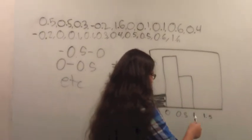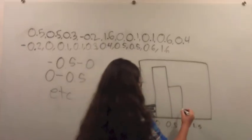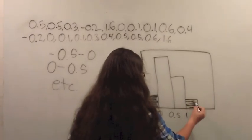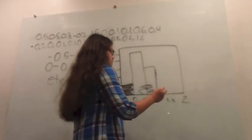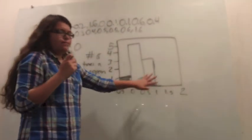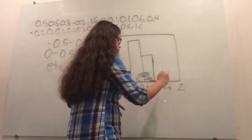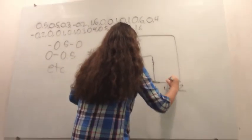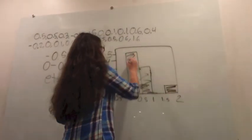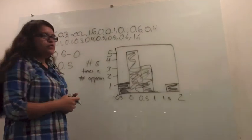And then the number of times a number appears between five tenths and one is three. Next is between one and one fifth, that's only one. Since there's no numbers between one and one fifth we just leave that blank, but there is a number between one fifth and two so we're going to go all the way to one. Just fill them in, and that's how you do histograms.